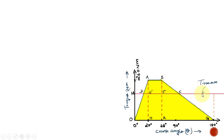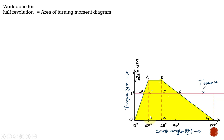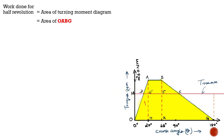The total work done for half a revolution equals the area of the turning moment diagram. The data is provided for up to 180°, so the entire work done equals the area of the turning moment diagram. The shaded area represents that region, which is the entire region OABG.